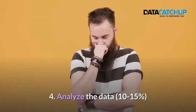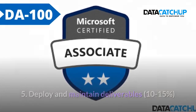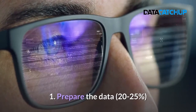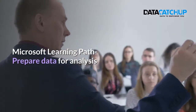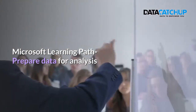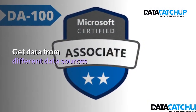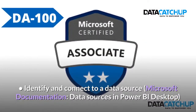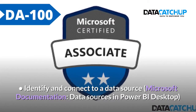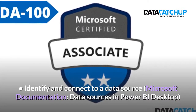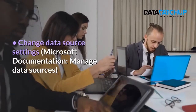Skills measured: 1. Prepare the data — 20 to 25%. 2. Model the data — 25 to 30%. 3. Visualize the data — 20 to 25%. 4. Analyze the data — 10 to 15%. 5. Deploy and maintain deliverables — 10 to 15%. Microsoft Learning Path: Prepare data for analysis.